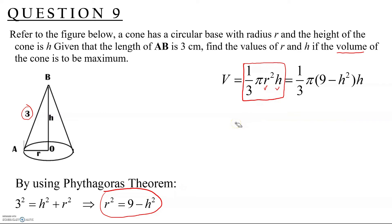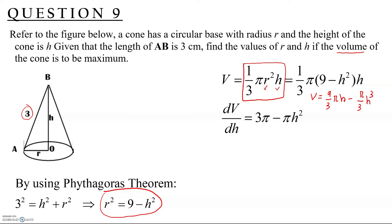Now V is in one variable only. Expanding: V = (9π/3)H − (π/3)H³ = 3πH − (π/3)H³. Differentiating with respect to H: dV/dH = 3π − πH². Equating to zero to find the critical point: 3π − πH² = 0.